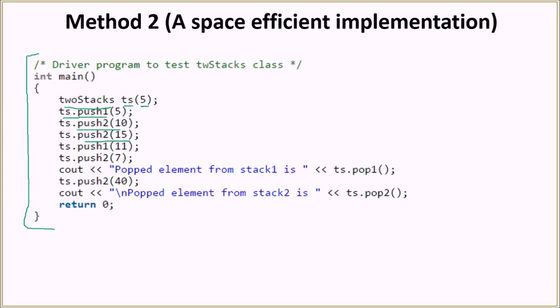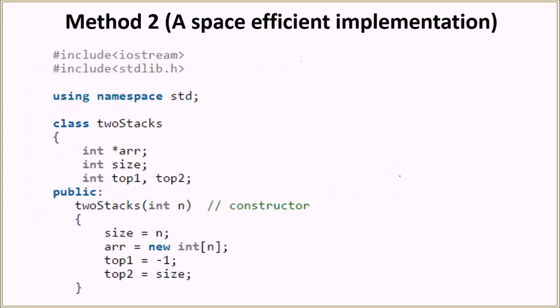Now, we do push1(5), then push2(10), 15, push1(11), push2(7). We will be doing all these push operations. Then we will be popping one element from each. In between, we are also pushing 40 in stack 2. We must get 40 from stack 2 and we must get 11 from stack 1. Let's look at the implementation of the twoStacks class.